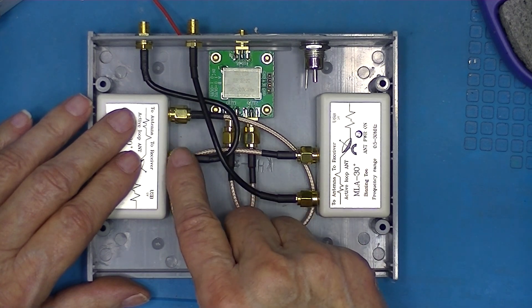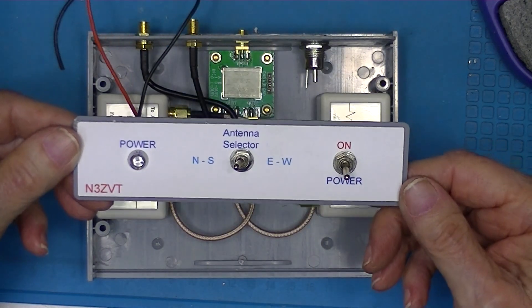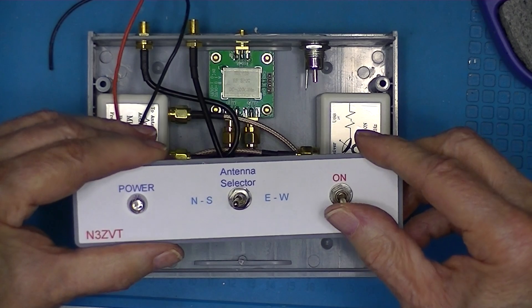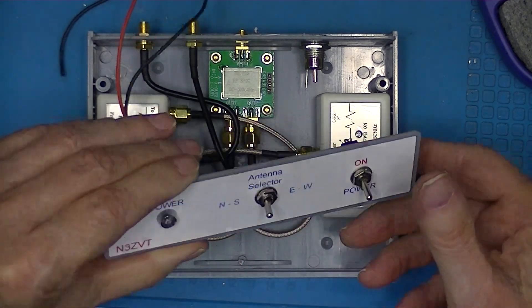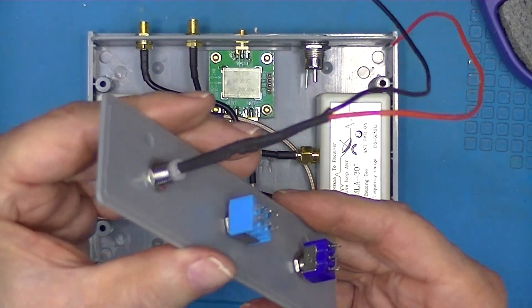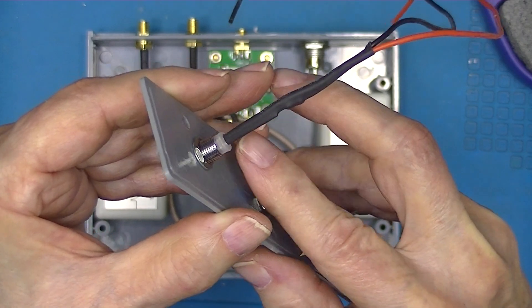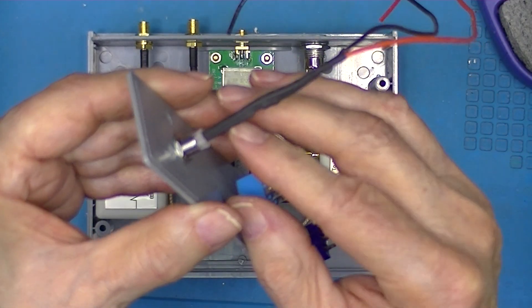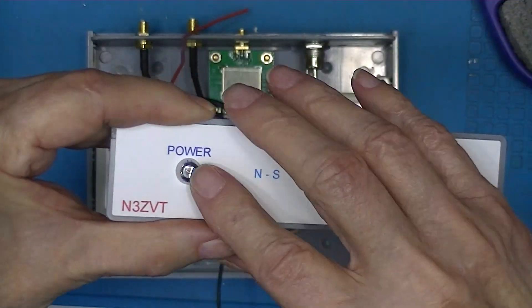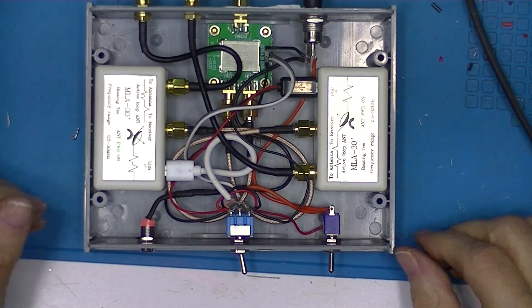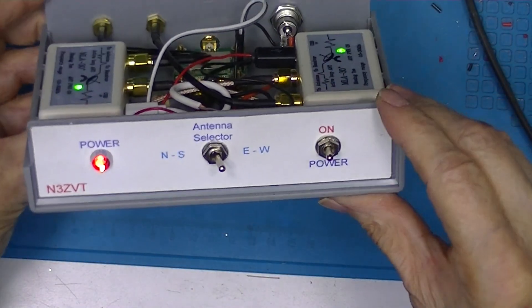I finished the front panel. I've got a power switch, an antenna selector, and an LED power indicator. The LED is held in with one of these bezel assemblies. This black heat shrink contains a 270 ohm series resistor to limit the current to this LED. I completed wiring on this antenna selector.